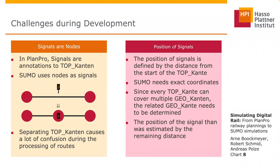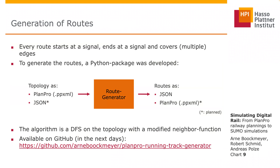Despite these challenges, it's pretty straightforward to implement this converter. Regarding route generation, we're able to generate new routes beyond just the planned ones, to cover all possible scenarios. This uses a depth-first search on the PlanPro topology with a modified neighbor function, resulting in all routes from start signal to end signal with the edges in between.